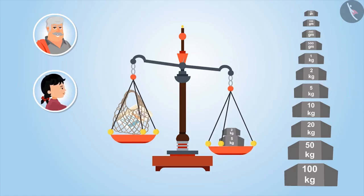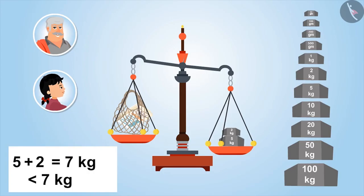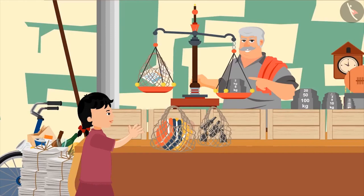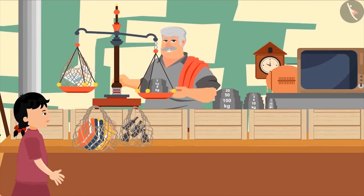Let's check by adding weighing stone of two kgs. Yes. Oh, look, this side carrying weighing stones has moved downwards. This means the weight of the newspapers is less than five plus two, seven kgs. Yes.